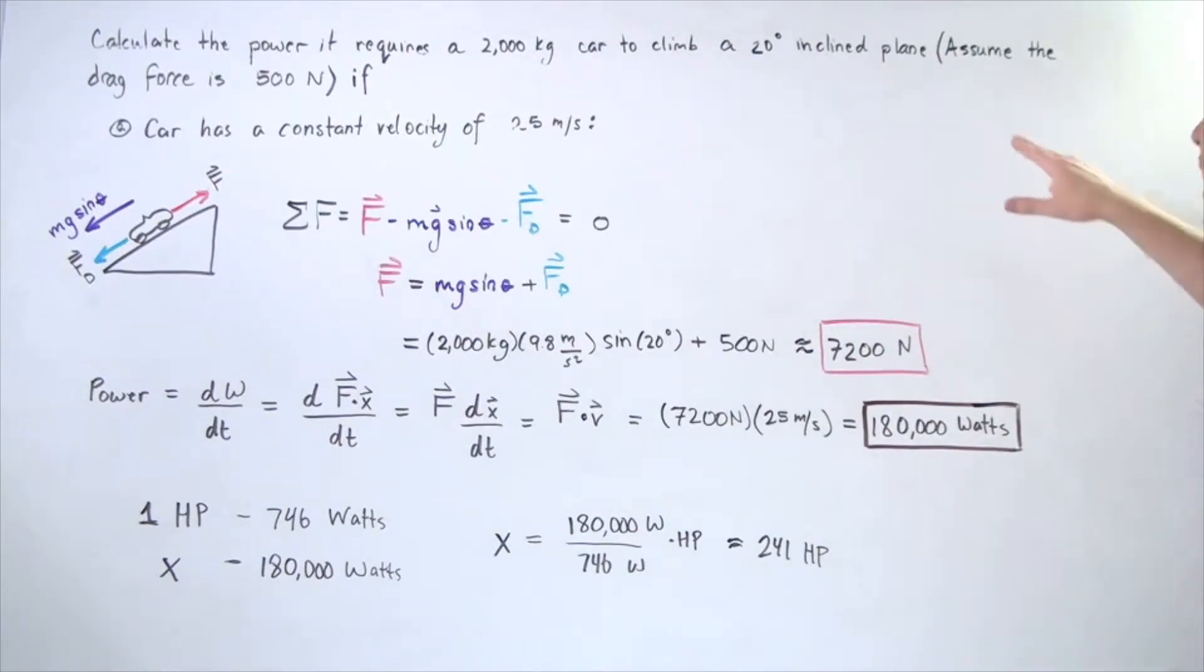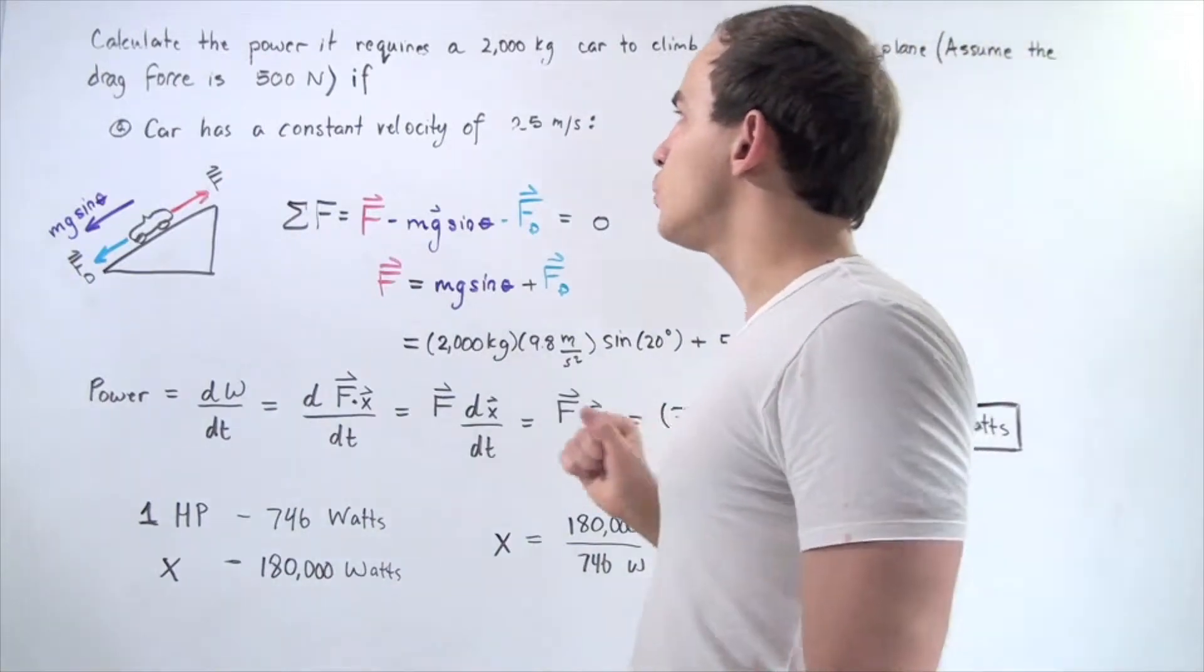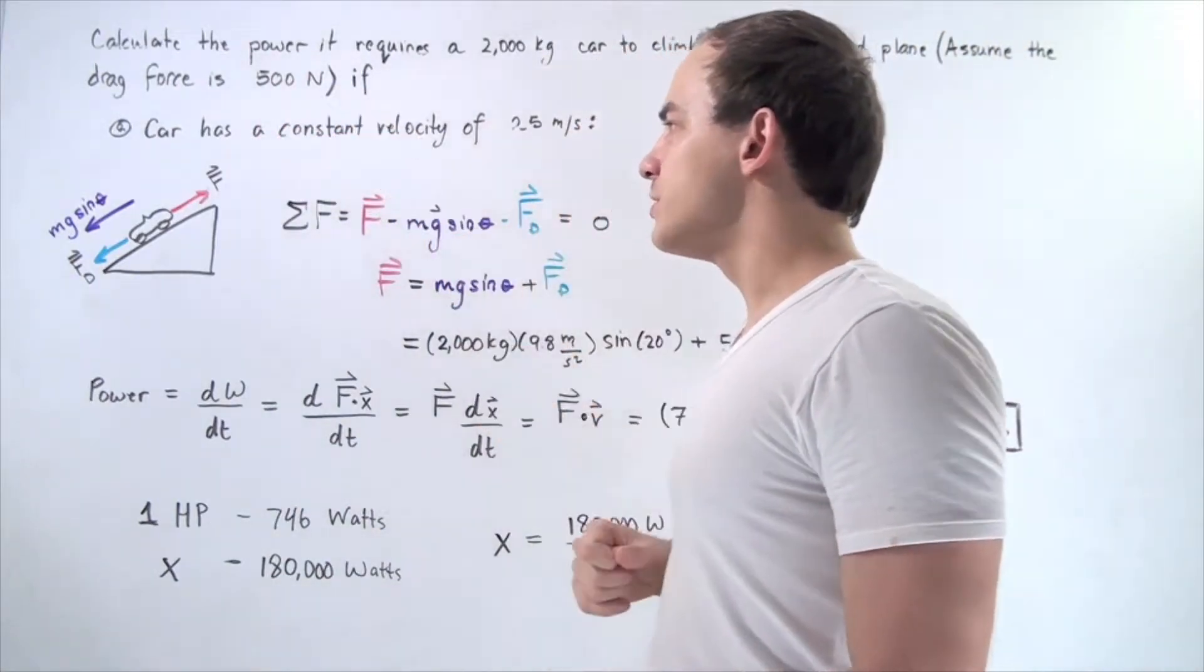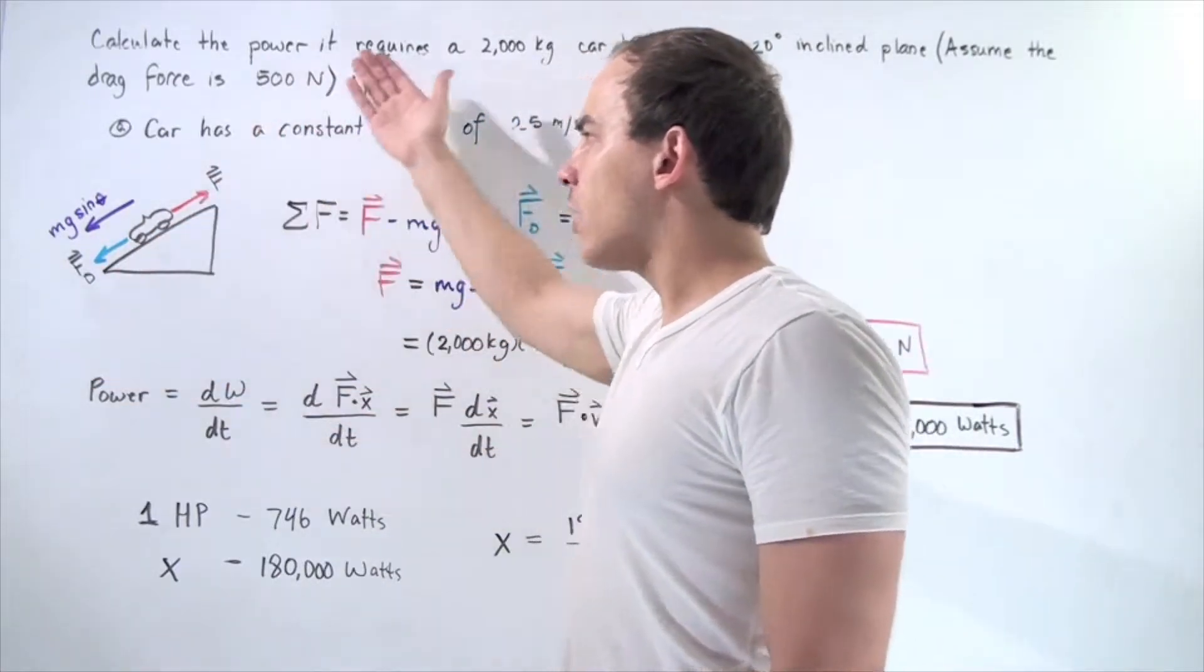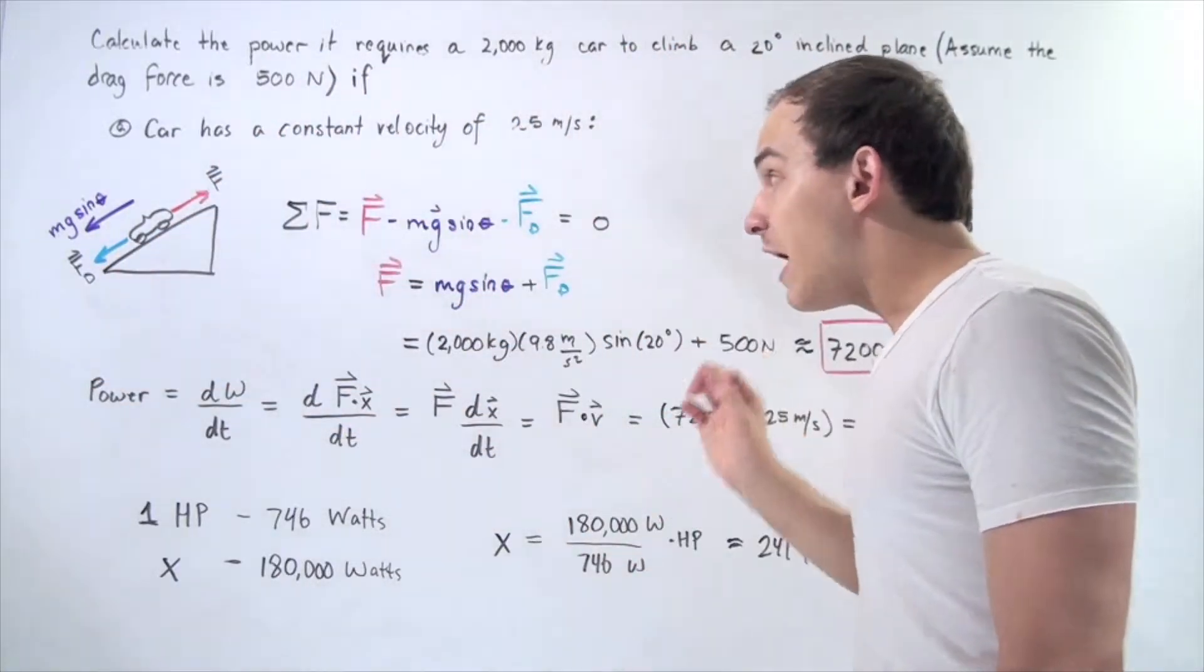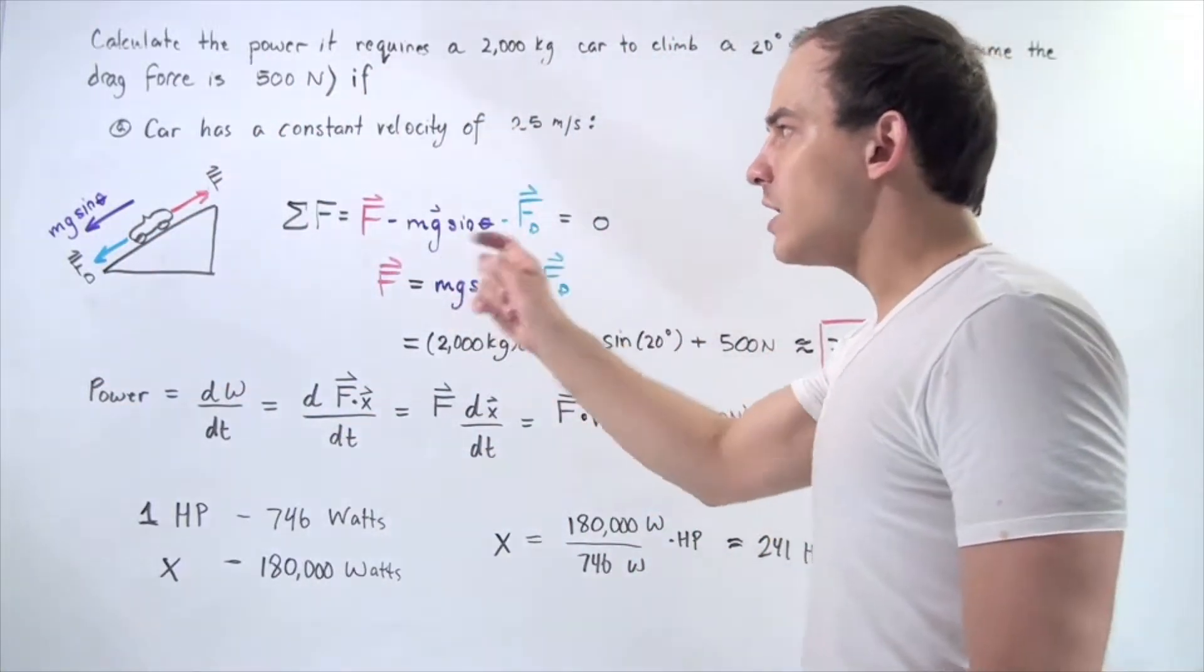We're assuming that there is a drag force due to air resistance and the magnitude is 500 newtons. Let's look at our object, our car, moving up our inclined plane. Let's find all the forces acting on our car.